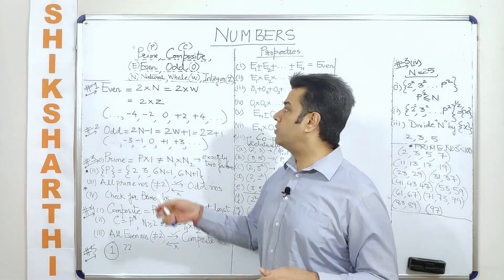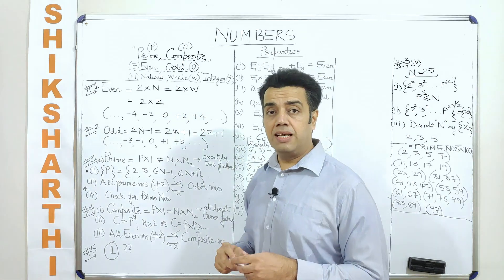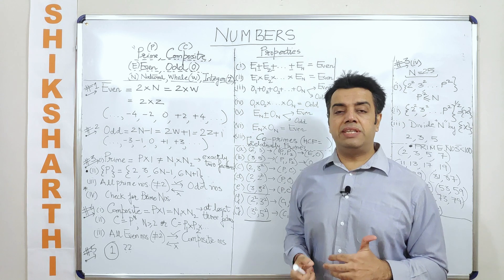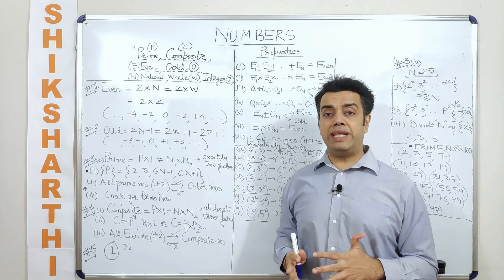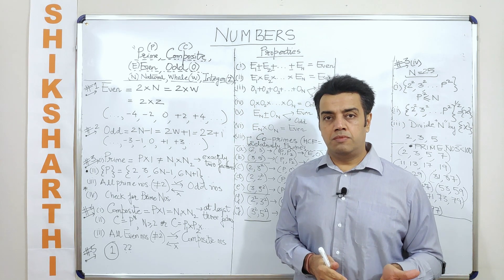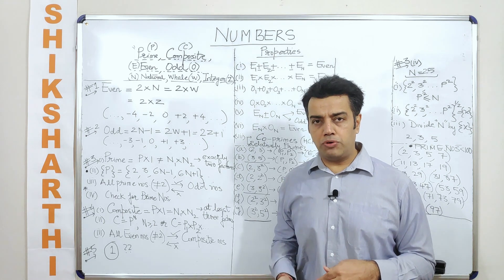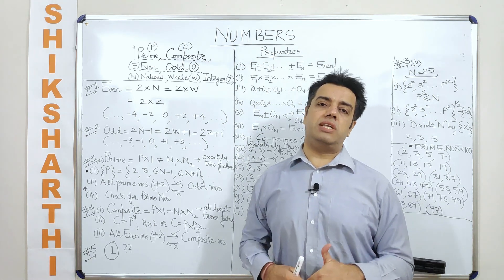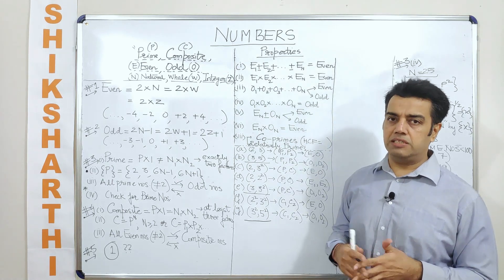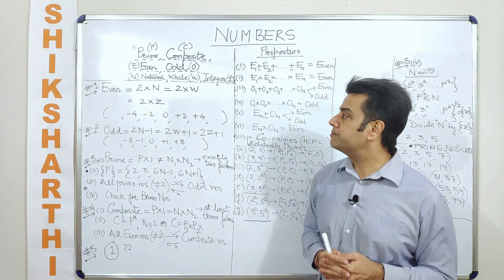What are integers? Are natural numbers integers? Yes. Are whole numbers integers? Yes. But then we have some negative numbers also. Negative numbers written without a decimal point, positive numbers written without a decimal point, and 0 are integers — which we have already talked about in the earlier video.